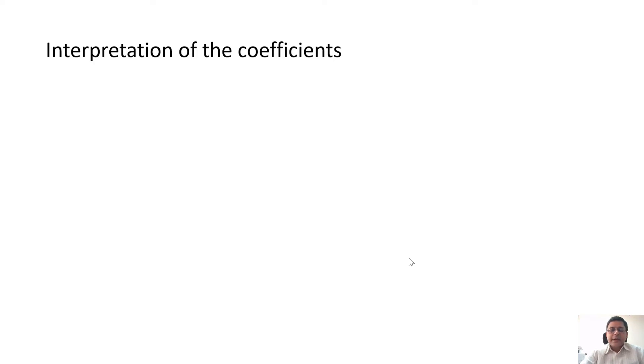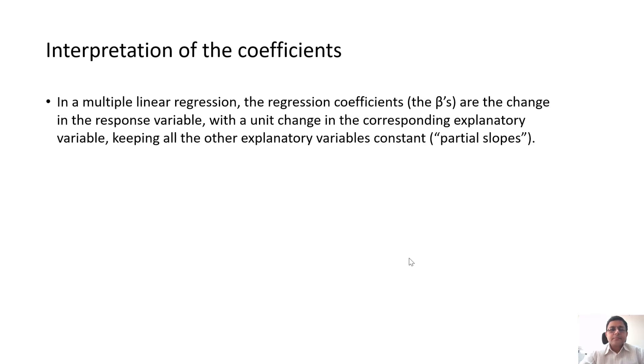The interpretation of beta 1 was keeping all the other explanatory variables fixed, one unit change in x1 changes y variable by how much? That is what is indicated by beta 1. For logistic regression, obviously, the interpretation is going to be different. Essentially in MLR, the regression coefficients are the change in the response variable with the unit change in the corresponding explanatory variable, keeping all the other explanatory variables constant. Those were called partial slopes, so betas were called partial slopes.